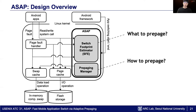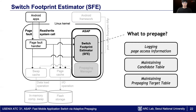Now let me explain ASAP's design in detail. We integrated ASAP into Android, and ASAP is composed of two components: Switch Footprint Estimator and pre-paging manager. The Switch Footprint Estimator, in short SFE, decides what to pre-page. For every switch, SFE logs a list of pages fetched by demand paging in switch time. To get this information, SFE relies on the page fault handler and read-write system calls, as shown in the figure.